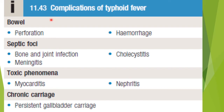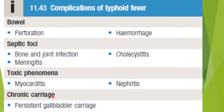The complications of typhoid fever can be discussed under four headings. First, the effect on the bowel: since the Peyer's patches are inflamed, there can be perforation through the Peyer's patches, leading to hemorrhage. Second, septic foci: the bacteria can travel to bone and joint causing bone and joint infection, septic arthritis, osteomyelitis, meningitis in the brain, and most commonly cholecystitis. Third, toxic phenomena due to toxins produced by Salmonella bacteria — myocarditis affecting the heart and nephritis affecting the kidneys. Fourth, if bacteria persist long-term in the gallbladder, there can be persistent gallbladder carriage.